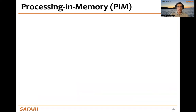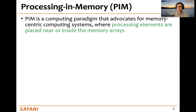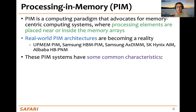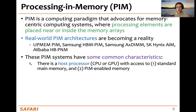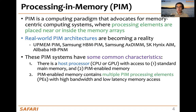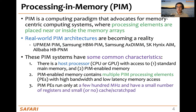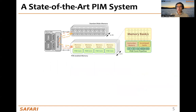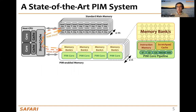Processing in-memory is a computing paradigm that advocates for memory-centric systems where there are processing elements near or inside the memory arrays. PIM architectures are becoming a reality with UPMEM, Samsung, SK Hynix, and Alibaba. These PIM systems have some common characteristics: there is a host processor — a CPU or GPU — with access to standard main memory and PIM-enabled memory. PIM-enabled memory contains multiple processing elements that run at only a few hundred megahertz and have a small number of registers or a small cache and scratch pad. PIM processing elements may need to communicate via the host processor.